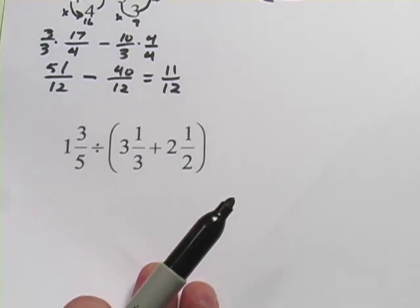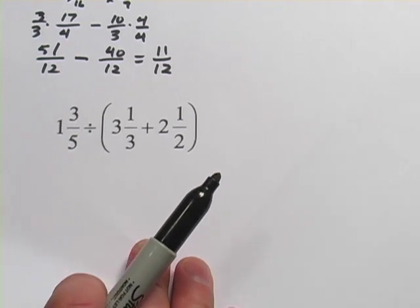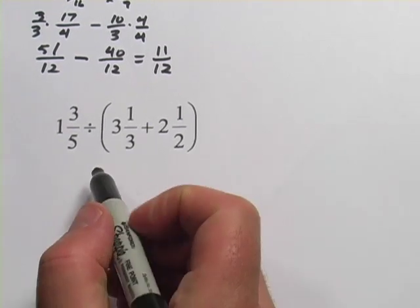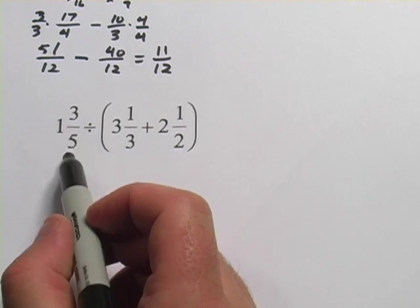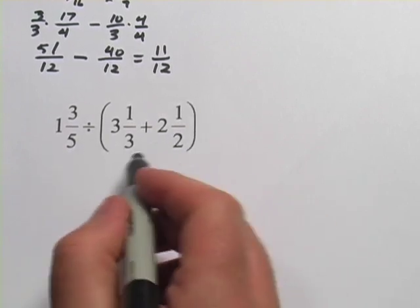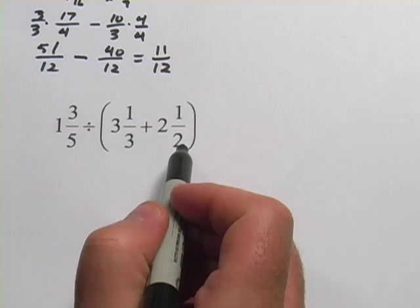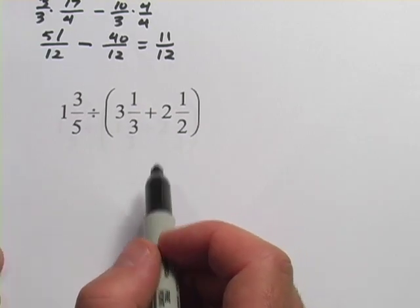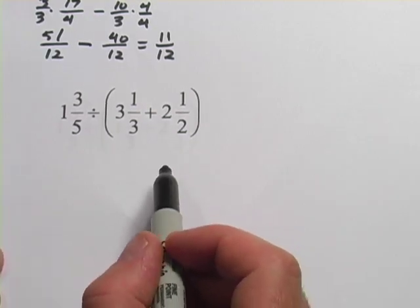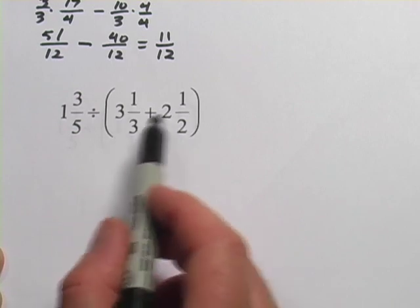Okay. One more here. And this looks even trickier, but maybe it's slightly easier. Well, we have 1 and 3 fifths divided by, and then in parentheses, all of this stuff. 3 and a third plus 2 and a half. The first step is to do the work inside the parentheses first. So I want to add these two.